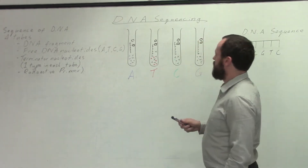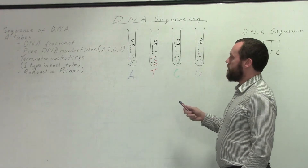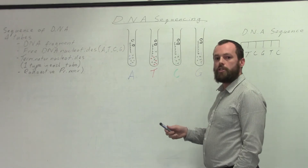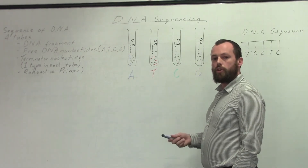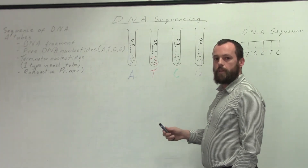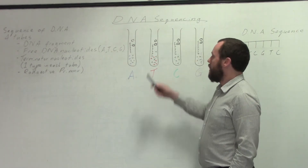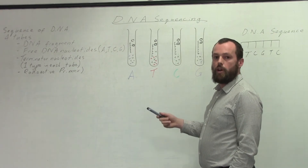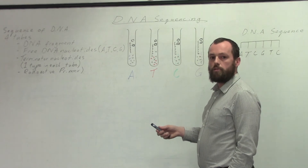So once we've got all those things set up in a test tube, what will happen? Within each test tube, the primer will attach and the DNA polymerase will cause the free-floating nucleotides to attach onto the complementary base on the DNA fragment. Now because it's random as to which nucleotide will attach, there's an equal chance that a normal nucleotide will attach at its complementary base, or that a terminator nucleotide will attach at its complementary base.